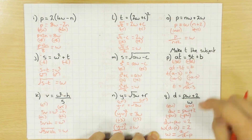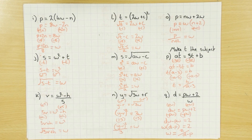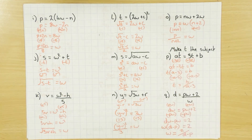So that's what you do if you have two of the same subject: get them onto the same side, everything else to the other side, and then factorize it so you can isolate it, like I did in these three examples. Hopefully that helps. Cheers.